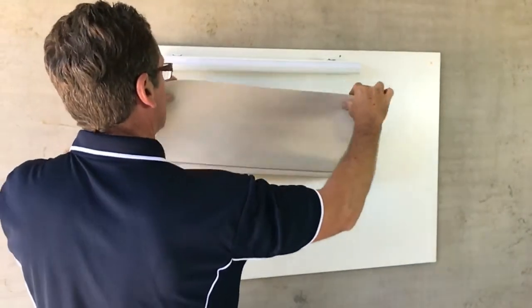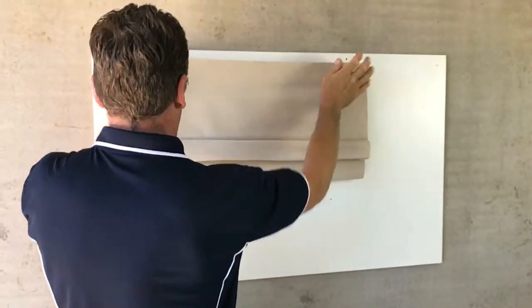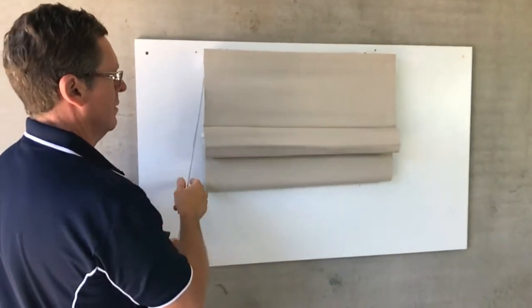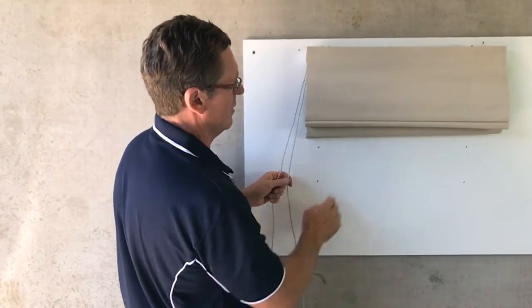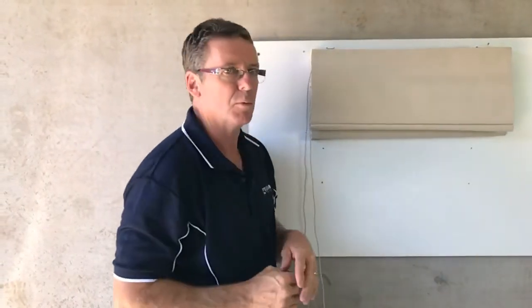Reattach the fabric and then give it a test. And as you can see, the blind now pulls up straight.